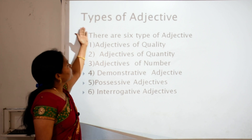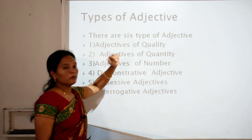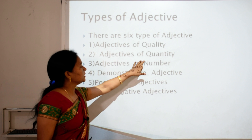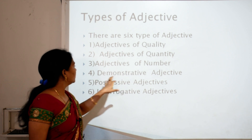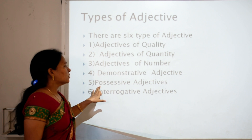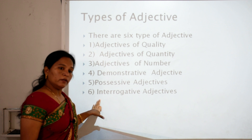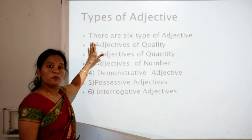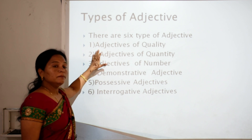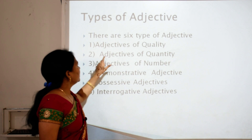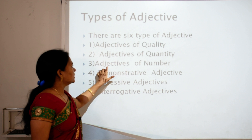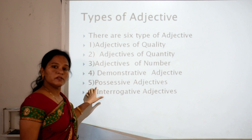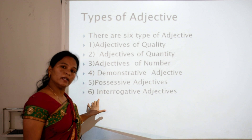Now let's look at the types of adjectives. There are six types: adjectives of quality, adjectives of quantity, adjectives of number, demonstrative adjectives, possessive adjectives, and interrogative adjectives.